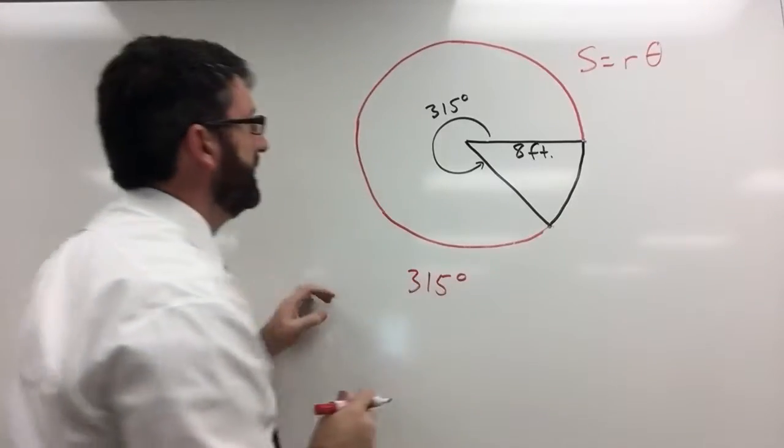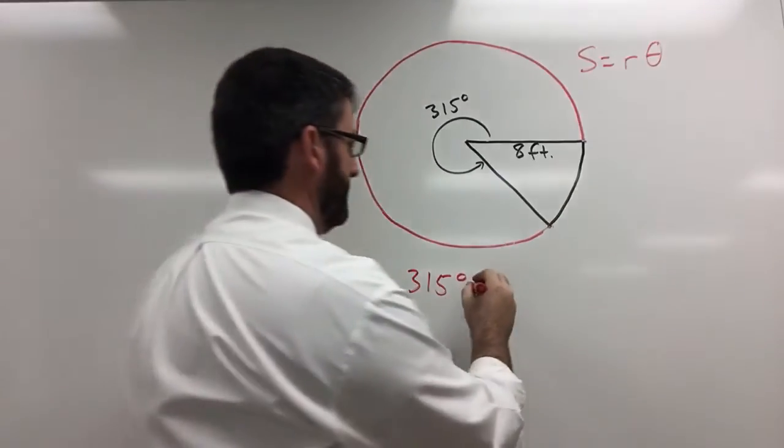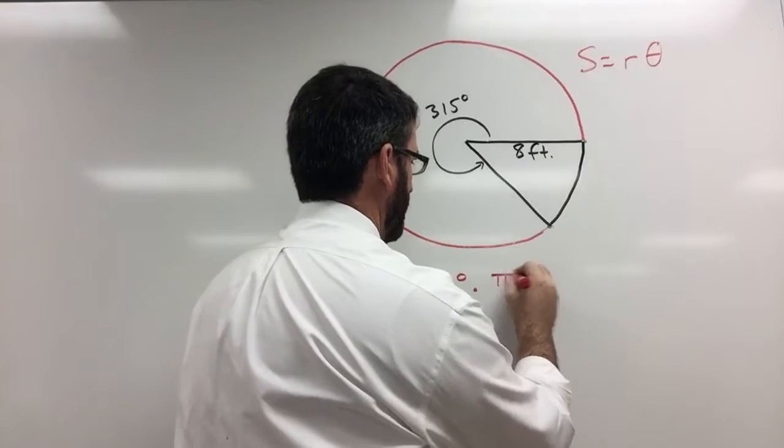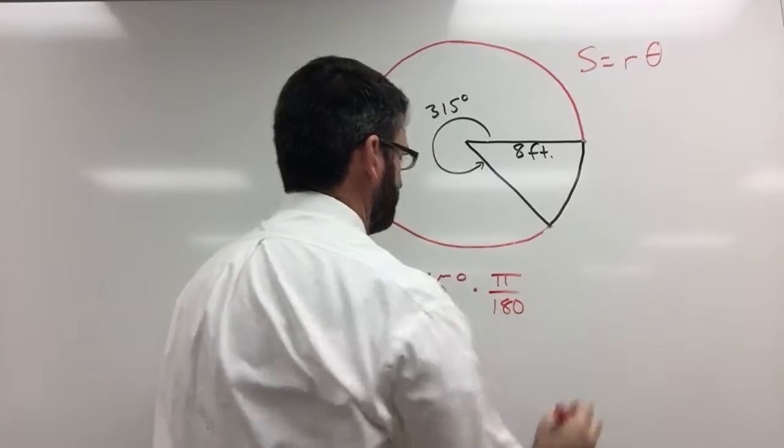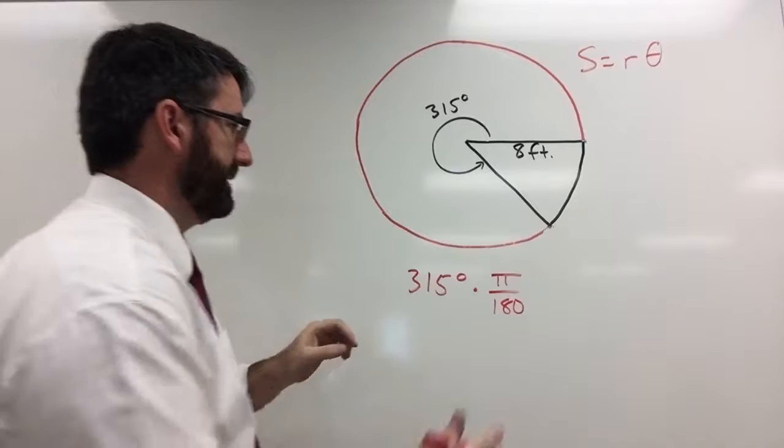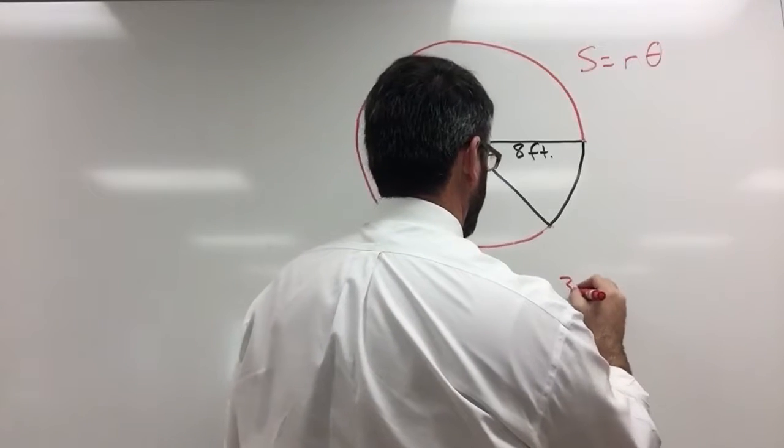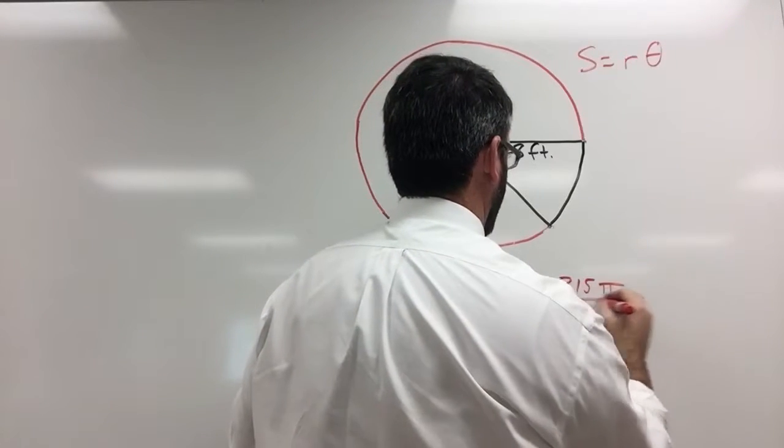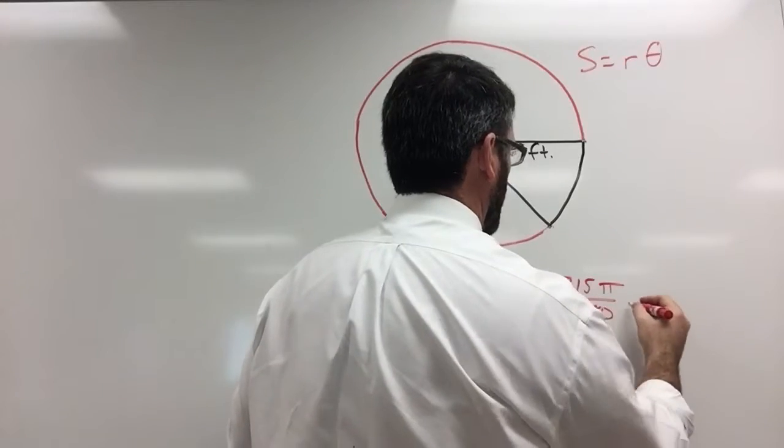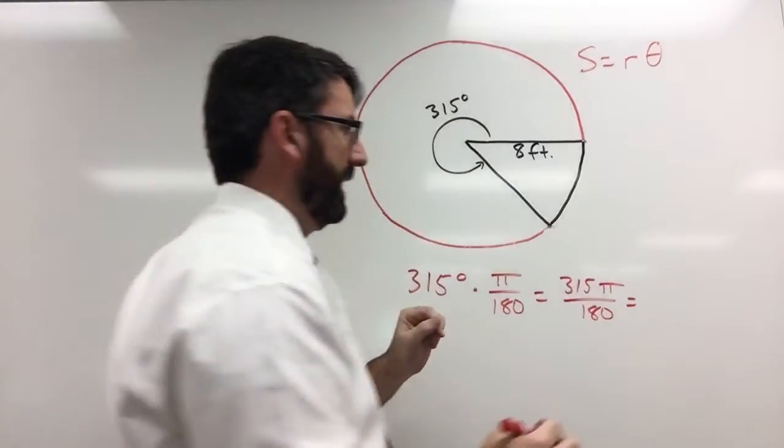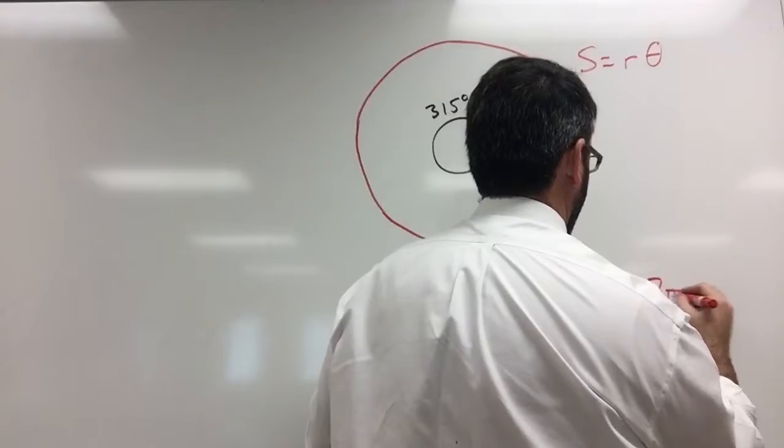So 315 degrees, to convert this into radians, we need to multiply this by pi over 180. And so that's going to give us 315 pi over 180, which reduces to 7 pi over 4.